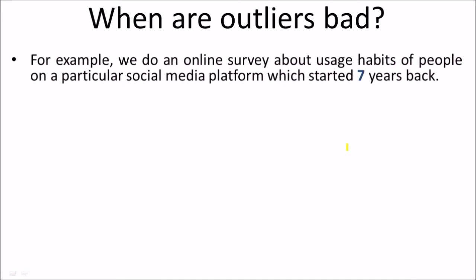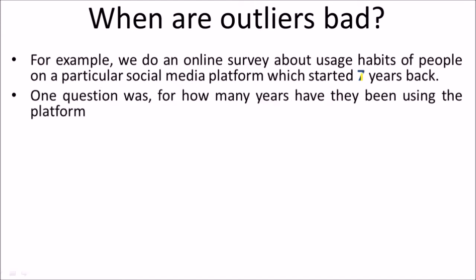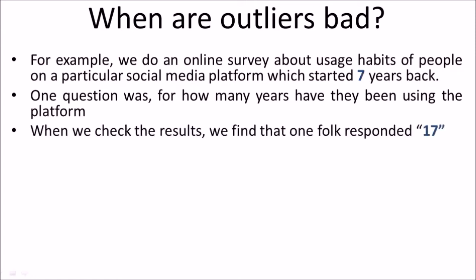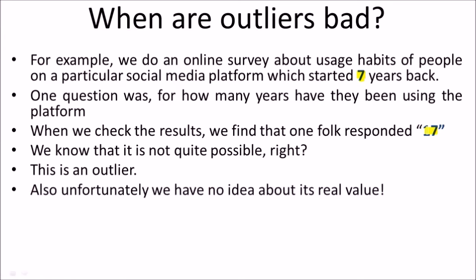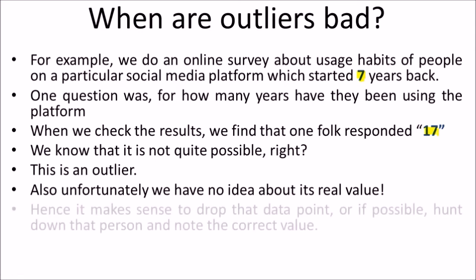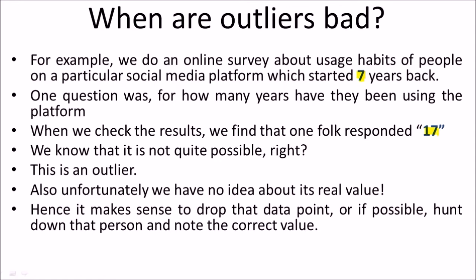Now, when are outliers bad? For example, we do an online survey about usage habits of people on a particular social media platform that started 7 years back. One of the questions asked how many years they had been using the platform. When we check the results, we find that one respondent answered 17 years. But that is not possible, because the platform was started only 7 years back. This is an outlier. We have no idea about its real value — whether this person meant 1 year, 7 years, or maybe misunderstood the question. Hence, it makes sense to drop this data point, or if possible, track down this person and note the correct value.